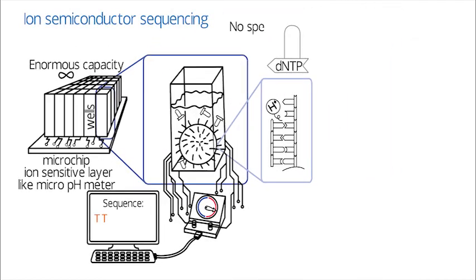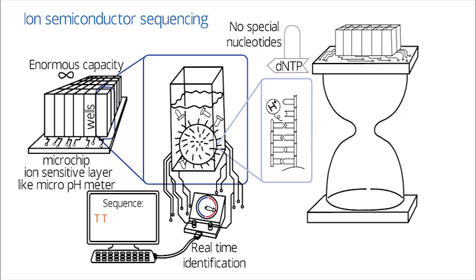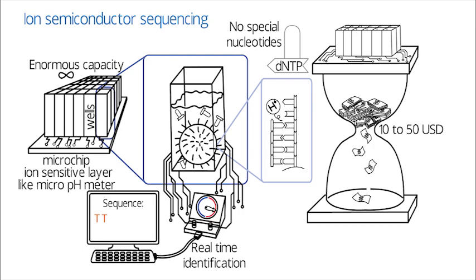By eliminating the need for special nucleotides and achieving real-time identification via pH monitoring instead of fluorescence, current ion semiconductor sequencing already boasts an impressive cost between 10 to 50 USD per MB in a matter of hours, and maybe better.